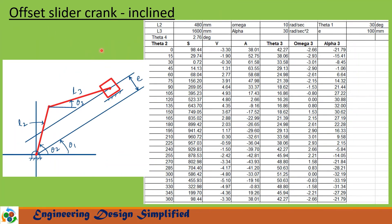After having derived all the necessary equations, now let us solve a problem using Microsoft Excel. In this problem, crank length L2 is 480 mm, coupler length L3 is 1600 mm, angular velocity of crank omega 2 is 10 radians per second, angular acceleration of crank alpha 2 is 30 radians per second squared, theta 1 is 30 degrees, and offset E equals 100 mm. Using the previously derived equations, we found theta 4 equal to 2.7476 degrees. In this spreadsheet, the column for crank angle theta 2 goes from 0 to 360 degrees at an interval of 15 degrees, and the other columns give displacement, velocity, acceleration of the slider, and theta 3, omega 3, and alpha 3, all calculated for crank angles 0 to 360 degrees.